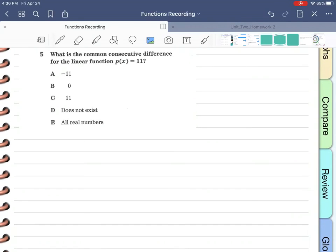So they tell me that it's linear. That means that the common consecutive difference has to occur at the first level. We can't go past that first column or we don't have a linear function.